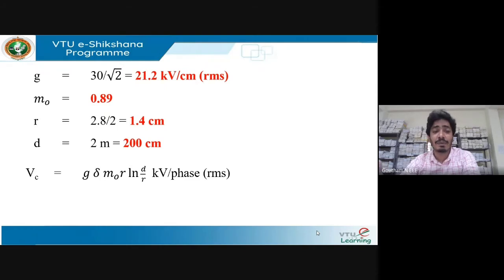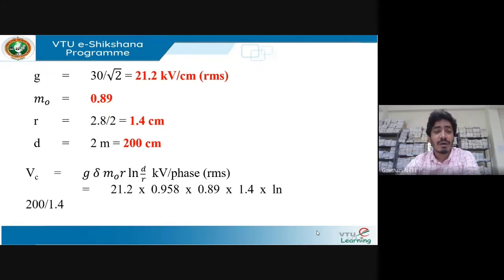V_c = g × δ × m₀ × r × ln(d/r) kV per phase RMS. Substituting the above values gives V_c = 125.56 kV per phase. This is the critical disruptive voltage per phase needed for the corona power loss expression.